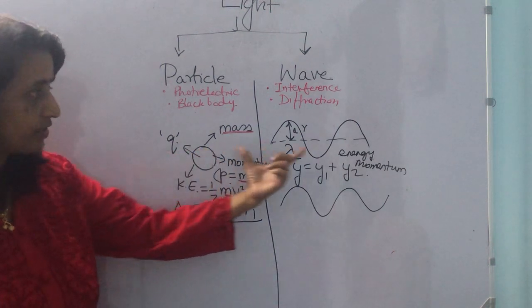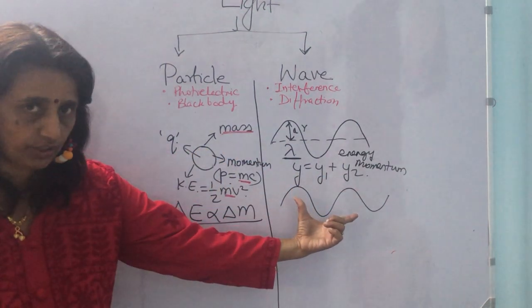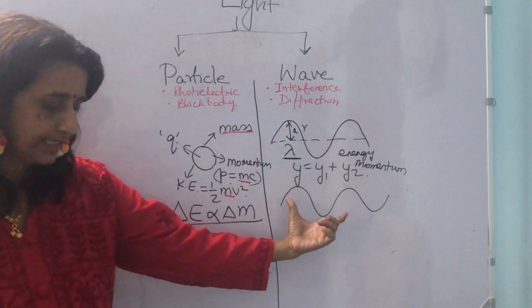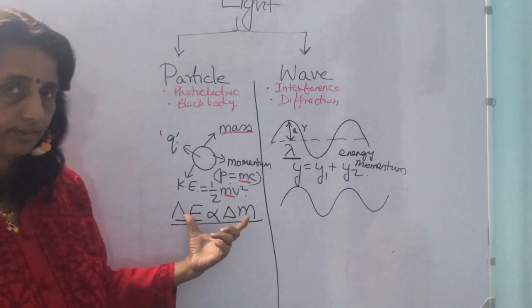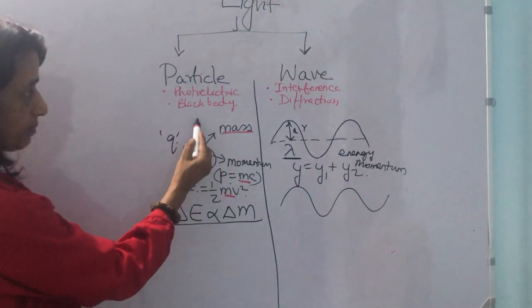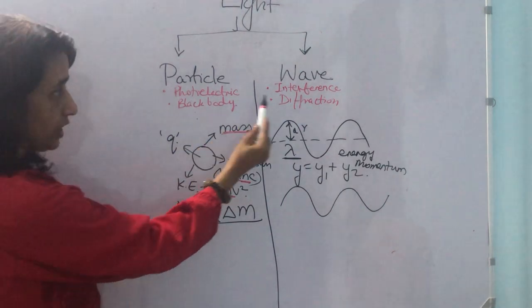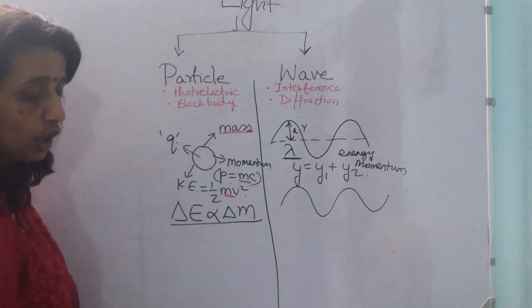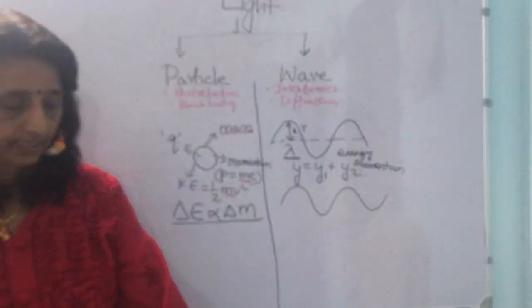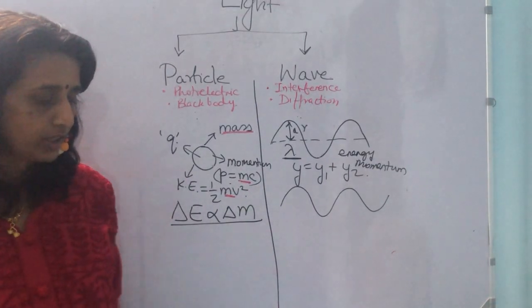Now, particle nature and wave nature do not exist simultaneously. They are complementary. That means, if you are observing particle nature, then you are not observing wave nature. If you are observing wave nature, you are not observing particle nature. They are complementary to each other.